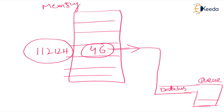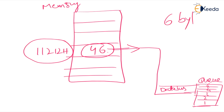The data bus transfers the data to the queue. What is the size of the queue? The size of the queue is 6 bytes. Please remember: all instructions are not the same size. The biggest instruction size in the 8086 microprocessor is 6 bytes. That is why the queue is 6 bytes.